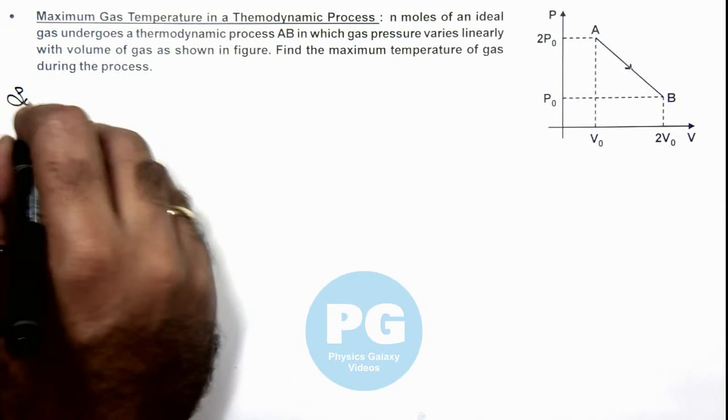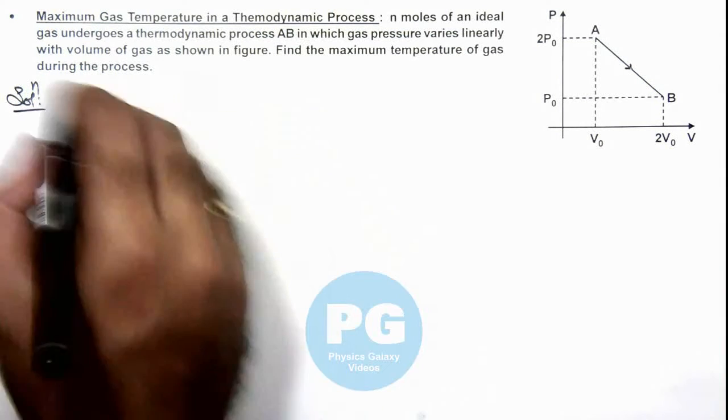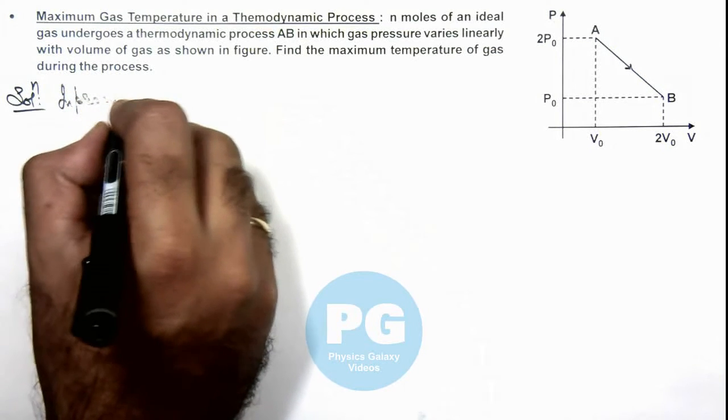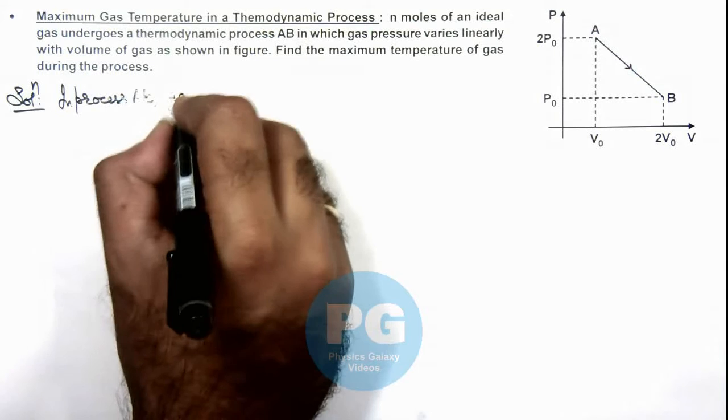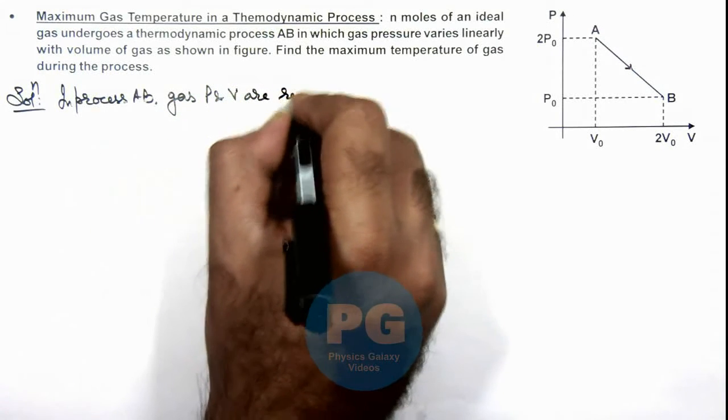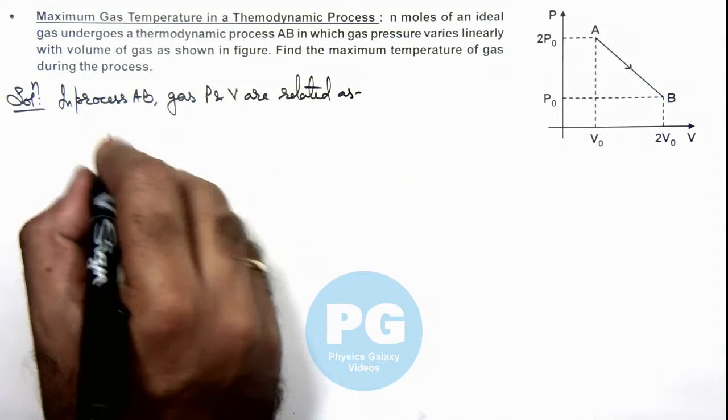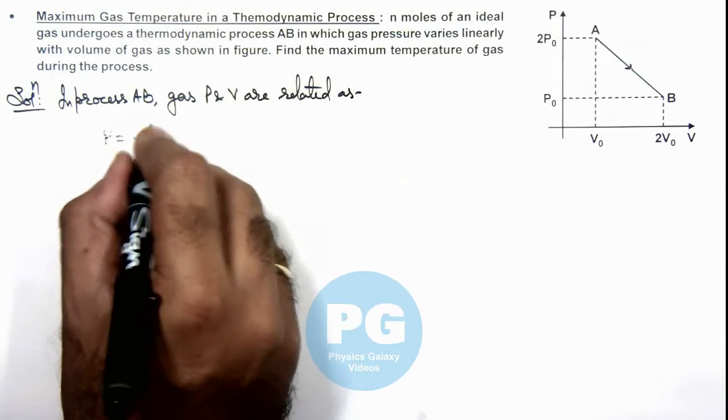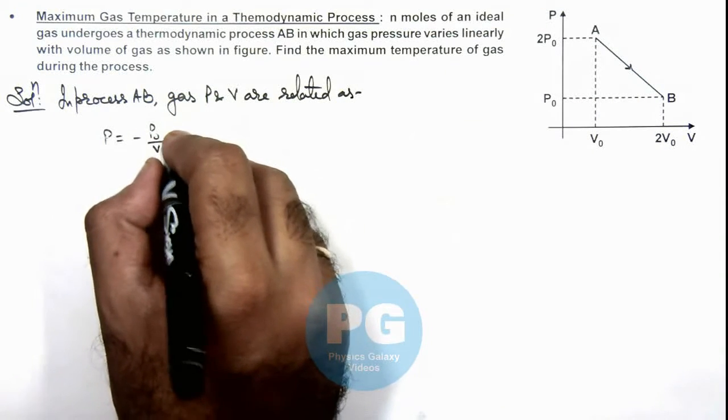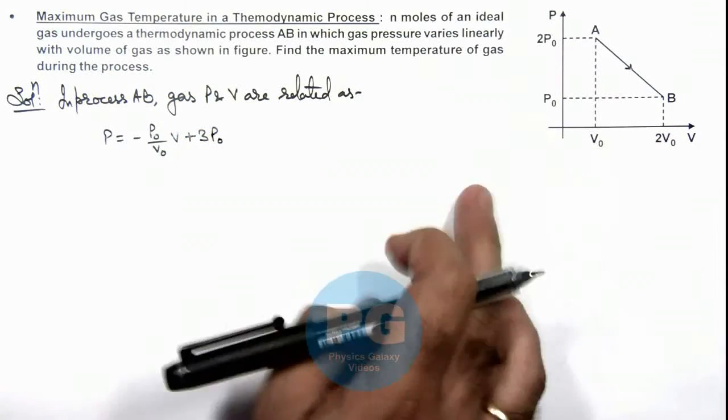In the solution, we first start with the relation between pressure and volume. In process AB, gas P and V are related as: P equals minus P₀ by V₀ (which is the slope of this line) multiplied by V, plus 3P₀. That is the equation of this straight line in P and V.